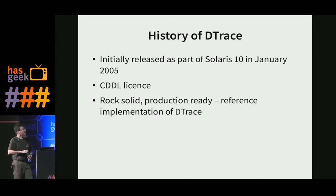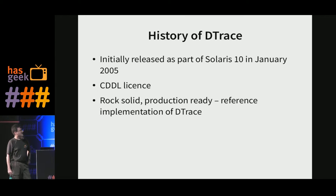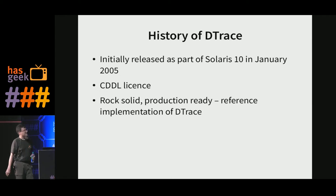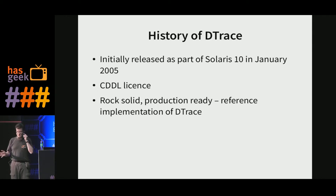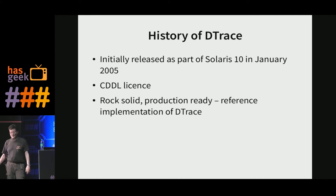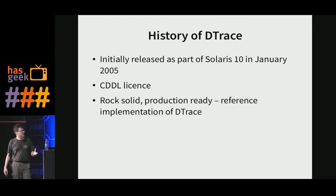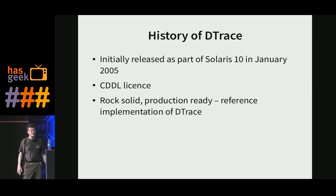DTrace has been around for a while — it's already 11 years old. It came out as one of the big killer features of Solaris 10. It's really, really solid on Solaris — it's production ready. In fact, Sun Microsystems really encouraged you to just use it on your production systems in a live scenario. If your production system is having a problem and not performing the way you want, just go in, use DTrace, look at the running system, and find out why. You can use it to debug a problem as it's happening, and it's designed to be stable enough that it won't crash your system.